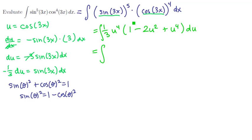Now we can distribute in. So if we distribute through, we're going to have a 1 third u to the fourth minus a 2 thirds u to the sixth plus a 1 third u to the eighth.